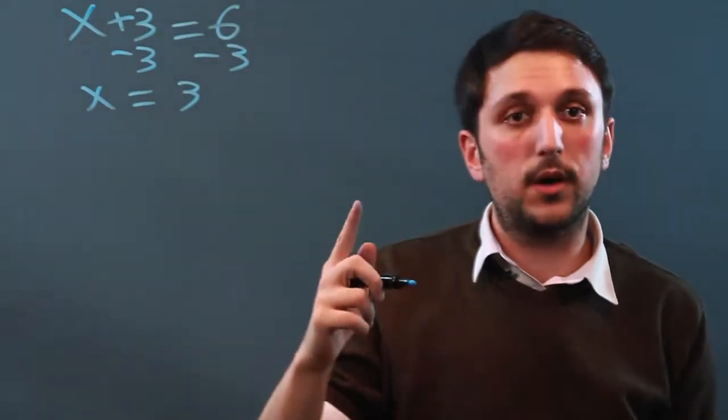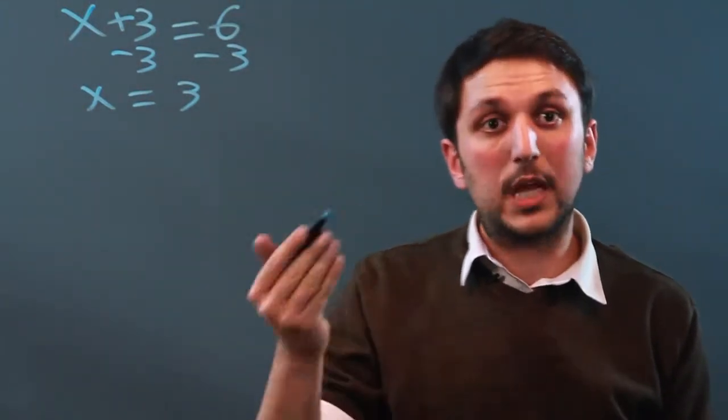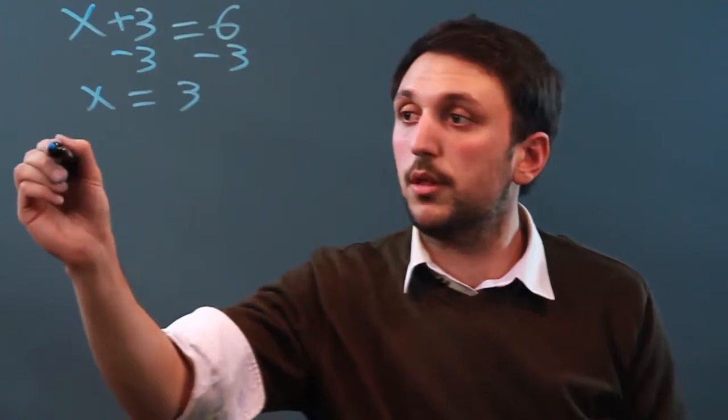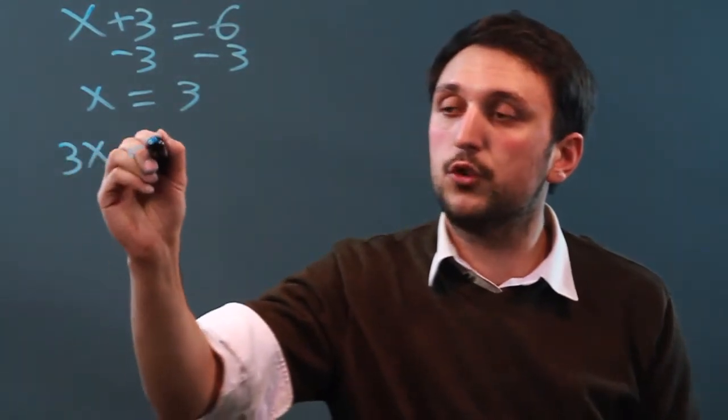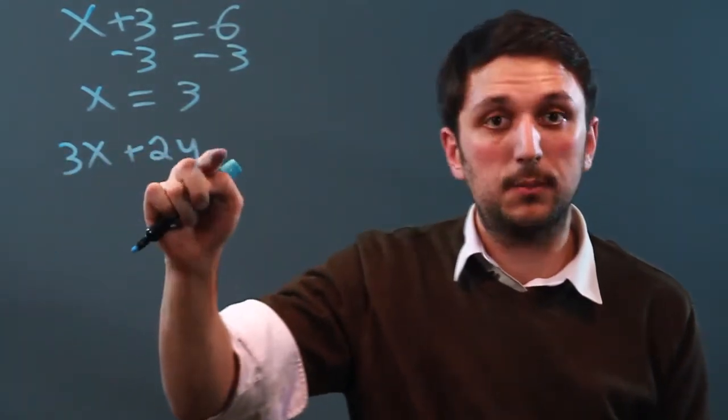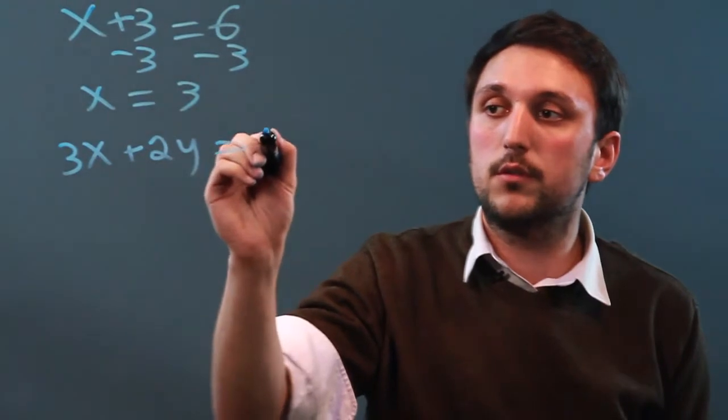Now, with a double variable problem, sometimes you can't solve it. For example, 3x plus 2y, x and y being my variables, equals 0.